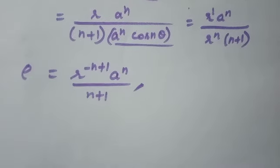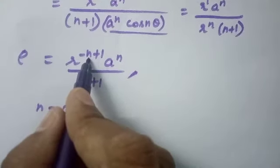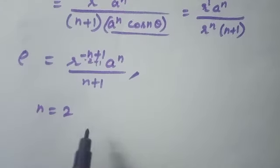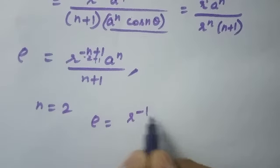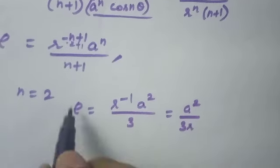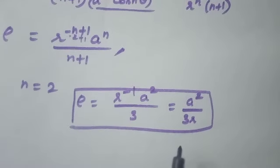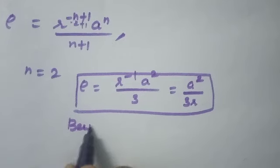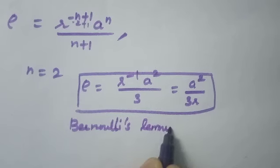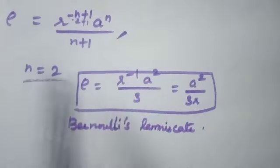There are particular cases. If n = 2: ρ = r^(−2+1) · a² / (2+1) = r^(−1) · a² / 3 = a² / (3r). This is known as Bernoulli's lemniscate.